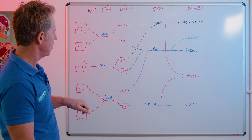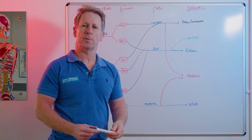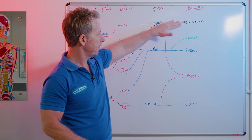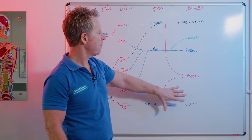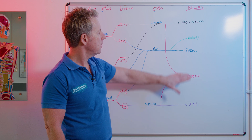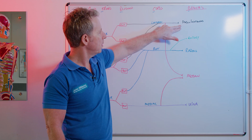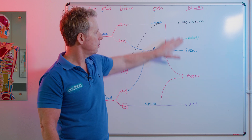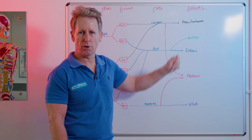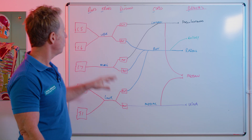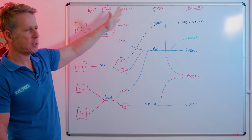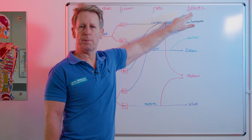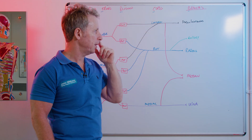The discussion today is mainly going to look at the cutaneous supply but mainly the motor supply of each of the branches. One way to remember the terminal branches is MARMU. And if you want to remember the way the brachial plexus splits, you can say 'remember to drink cold beer.'